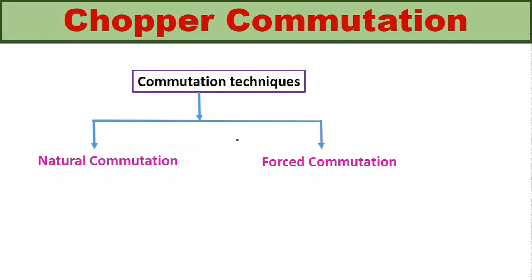The commutation techniques are categorized based on whether the source is AC or DC. If the source is an AC signal, the commutation is natural commutation; if the source is DC, force commutation is used. In natural commutation, when an AC input signal is used, during the negative half cycle of the AC input signal, a reverse voltage is applied across the conducting SCR, causing it to turn off.